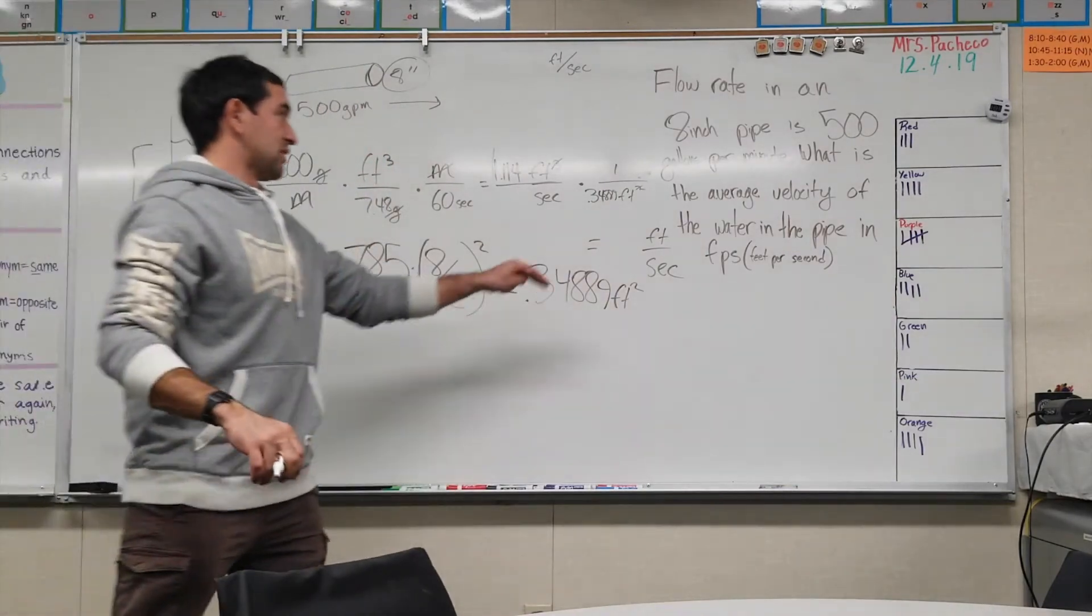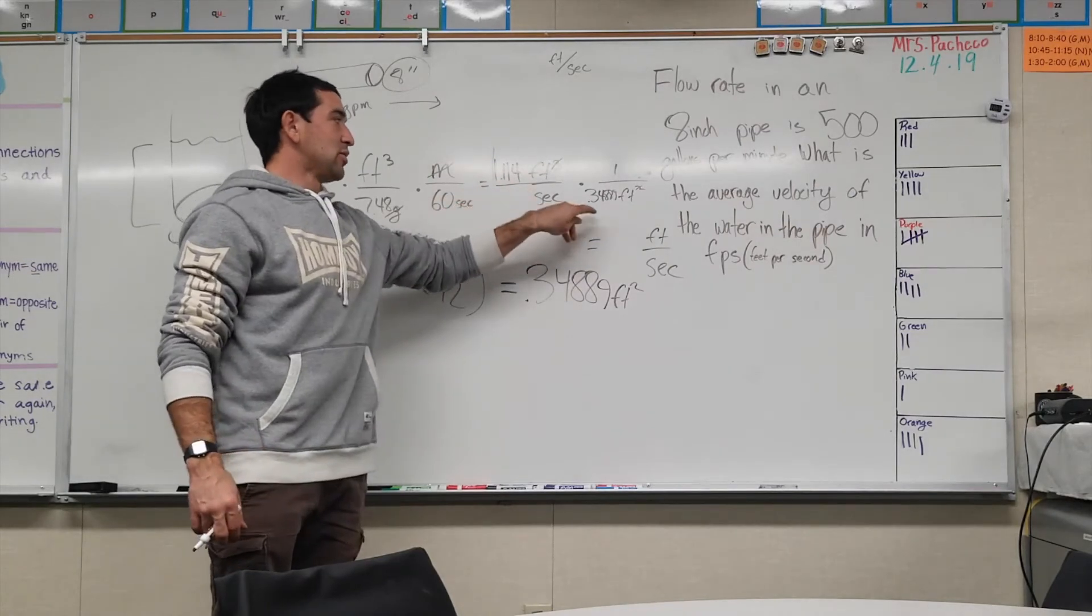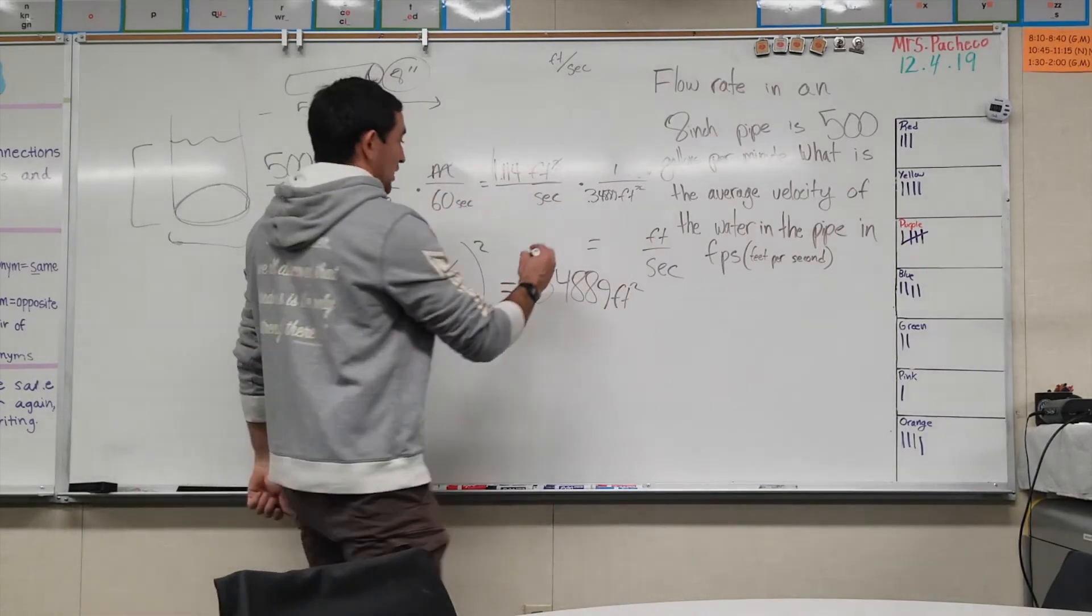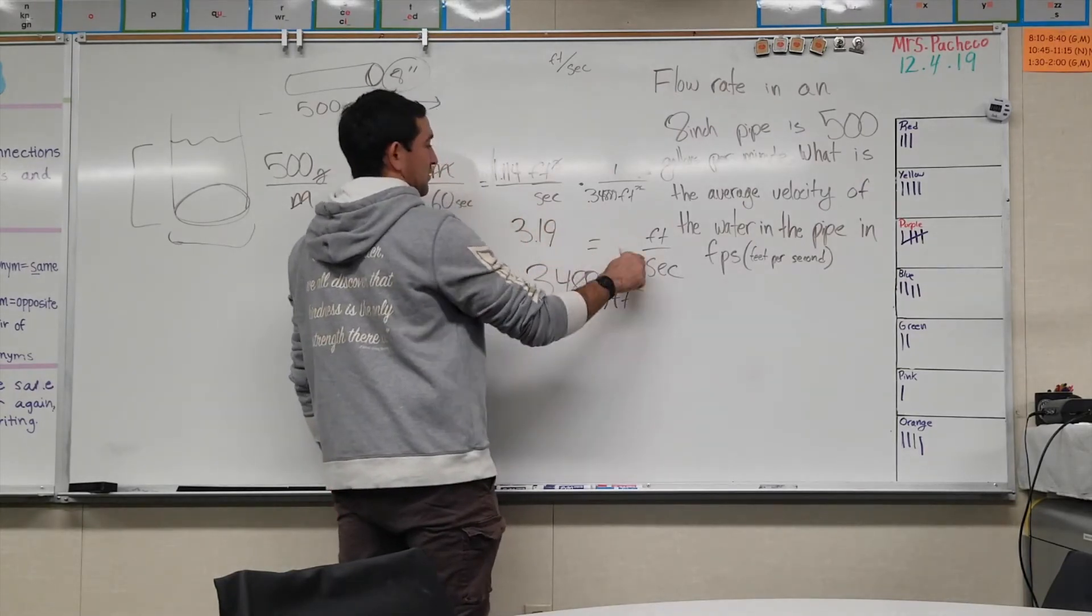The answer, when you divide - you put in your calculator 1.114 divided by 0.349, you get 3.19 feet per second.